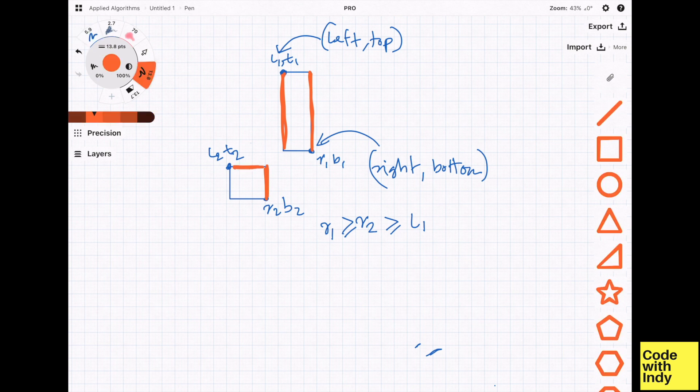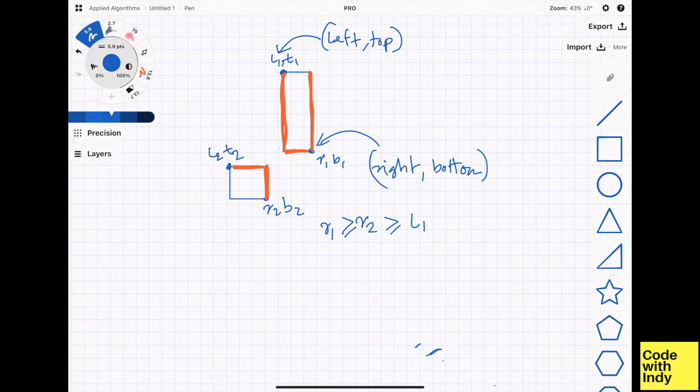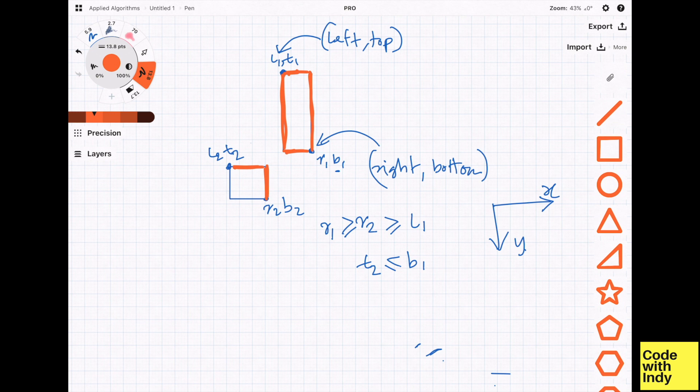Now, we have to check the top edge of rect 2. Similar to previous reasoning, if the top edge of rect 2 touches or beyond B1 to the north, but below T1, then we can say that rect 2 had collided with rect 1.